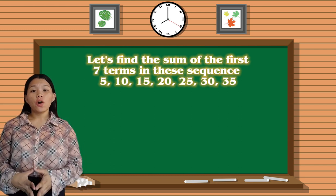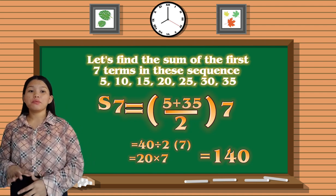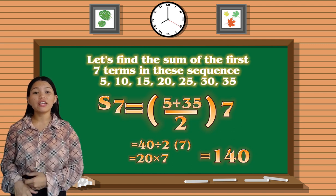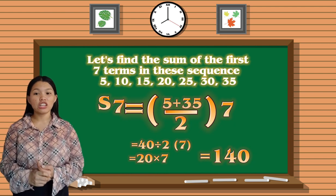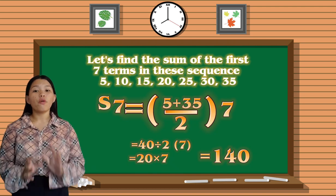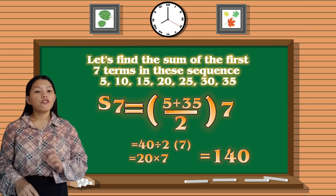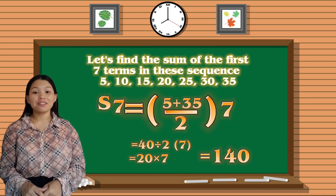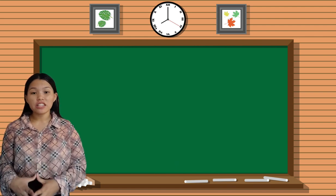So S_n = a_1, the first term, which is 5, plus a_7, which is 35, divided by 2 times n, which is 7. So 5 plus 35 equals 40 divided by 2 times 7. 40 divided by 2 is 20 times 7. The answer is 140. So that's the sum of the 7 terms.